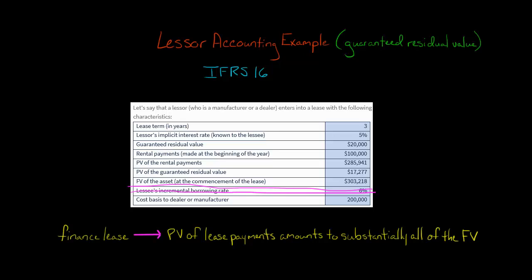We have a guaranteed residual value of $20,000. That means the lessee has guaranteed the lessor that this asset will be worth $20,000 when they return it at the end of the lease. There are going to be three rental payments of $100,000 — so $100,000 a year — with the first payment made at the beginning of the year. So on day one of the lease, there will be a payment of $100,000.